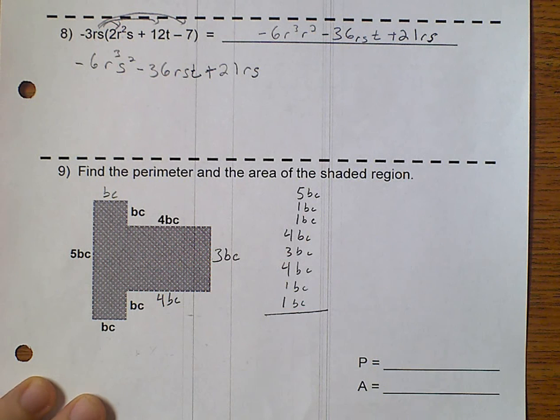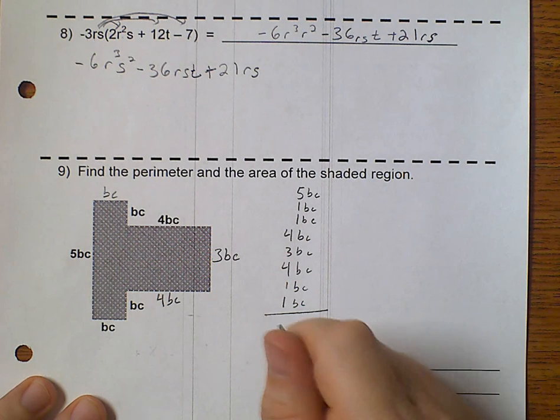If we add all those together, 5, plus 1, plus 1, plus 4, plus 3, plus 4, plus 1, plus 1, give us 20 bc.